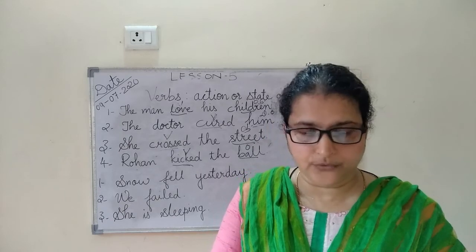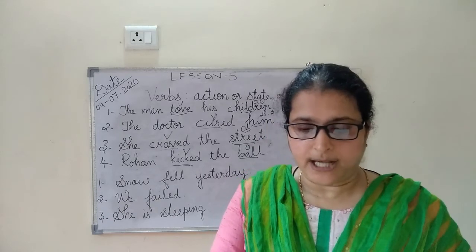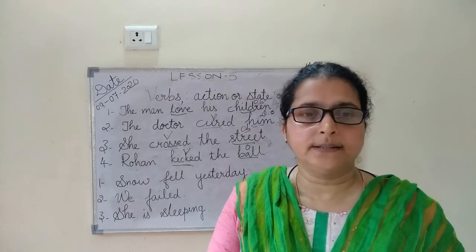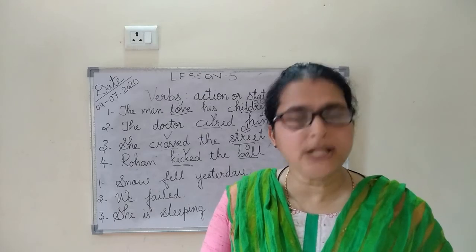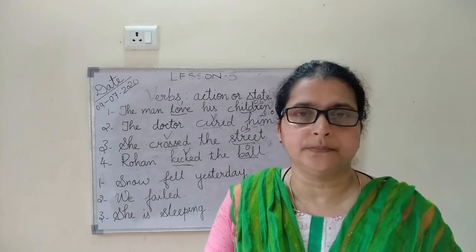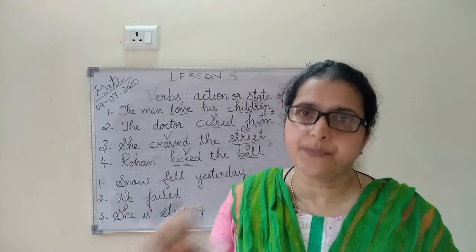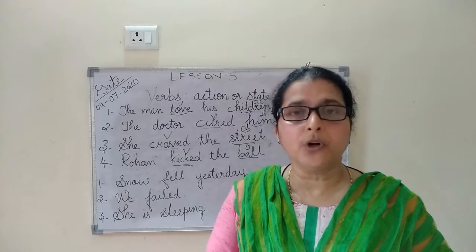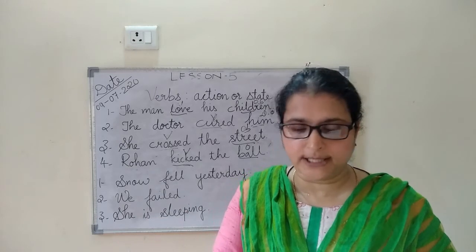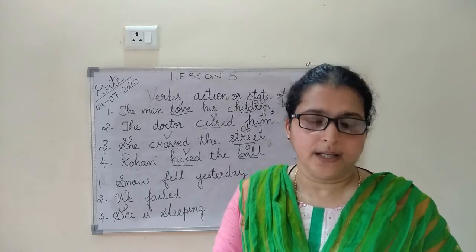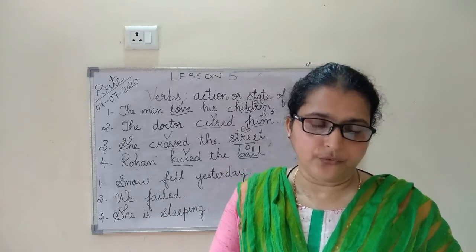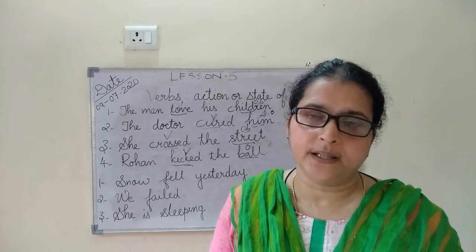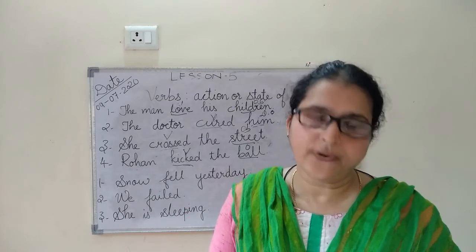There are two types of intransitive verb, on page number 43 in your book: verb of action and verb of being.